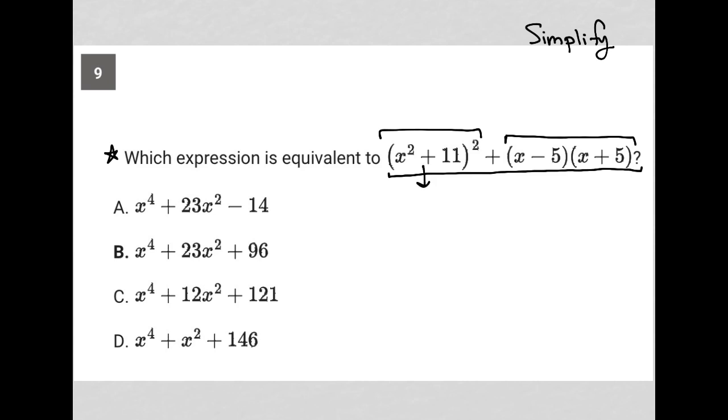So for instance, if I wanted to square this, I could just rewrite this twice. And then I can FOIL by taking the first term by the first term here, which gives me x to the fourth. And then the outer term by the outer term there, which gives me 11x squared. And then multiply the two inner terms there, which gives me another 11x squared. And then multiply the two last terms.